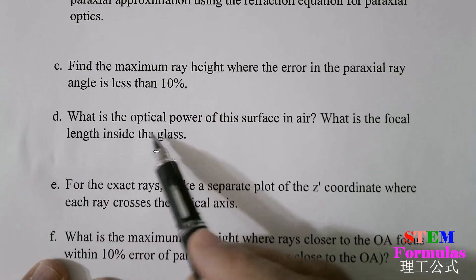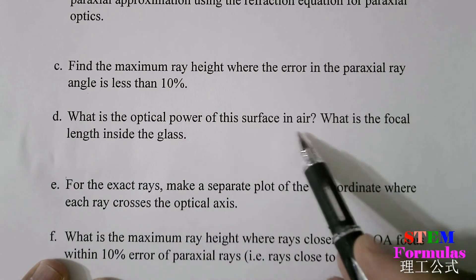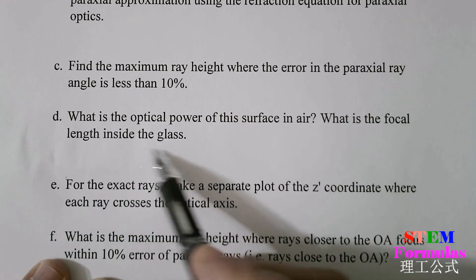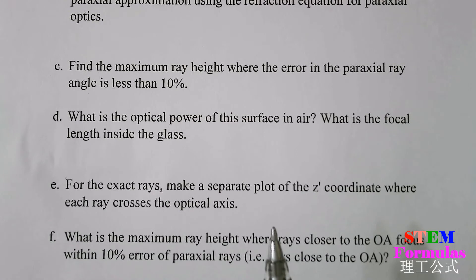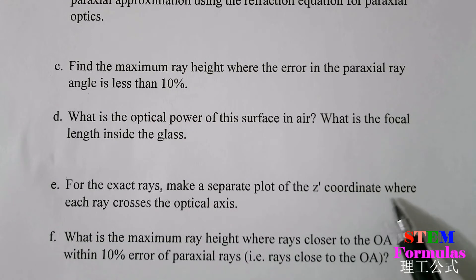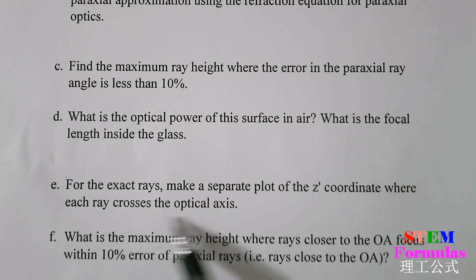Question D: What is the optical power of this surface in air? What is the focal length inside the glass? Question E: For exact rays, make a separate plot of the z-coordinate where each ray crosses the optical axis. Question F: What is the maximum ray height where rays close to the optical axis focus within 10% error of the paraxial rays?